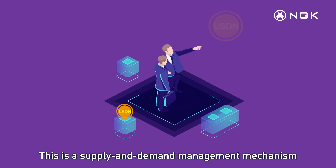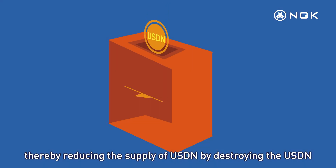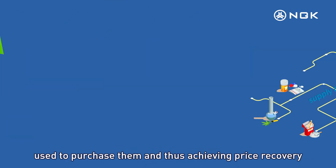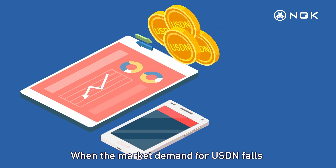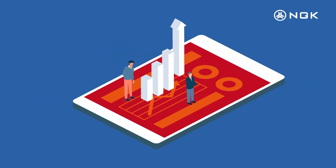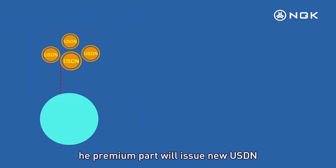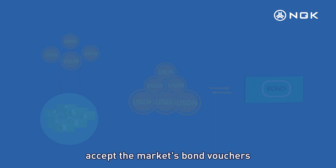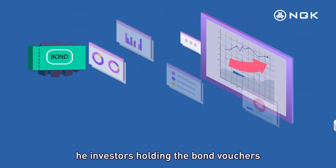The bond voucher is issued for less than USDN, equal to the loss of the USDN currency supply. This is a supply and demand management mechanism whereby investors can use USDN to purchase bonds, thereby reducing USDN supply by destroying the USDN used to purchase them, achieving price recovery. When market demand falls and bond vouchers are sold at a lower price, and when market demand rises, a premium is generated.